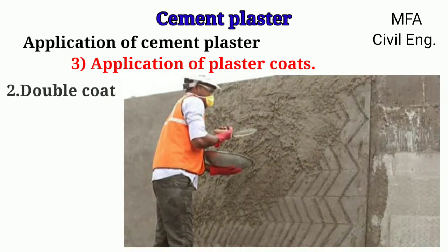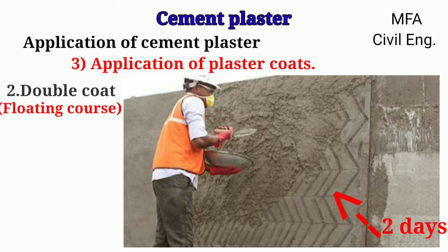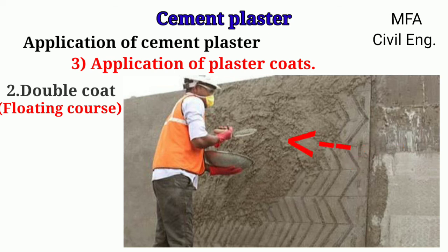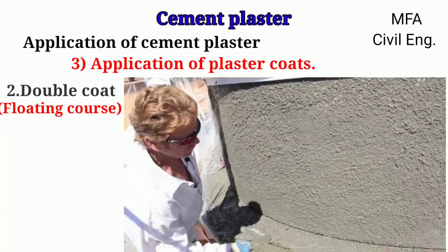For double coat plaster, also called a floating course, the surface of the first coat is exposed to air to set and harden for almost two days but not to dry completely. After this period, the surface of the first coat is sprinkled with water and freely scored all over with the edge of the trowel. The second coat is then applied uniformly with the trowel, pressed and leveled with the wooden edge to obtain the desired surface, and finally finished by sprinkling water and rubbing with the float. The thickness of the second coat is usually 6 to 10 mm.